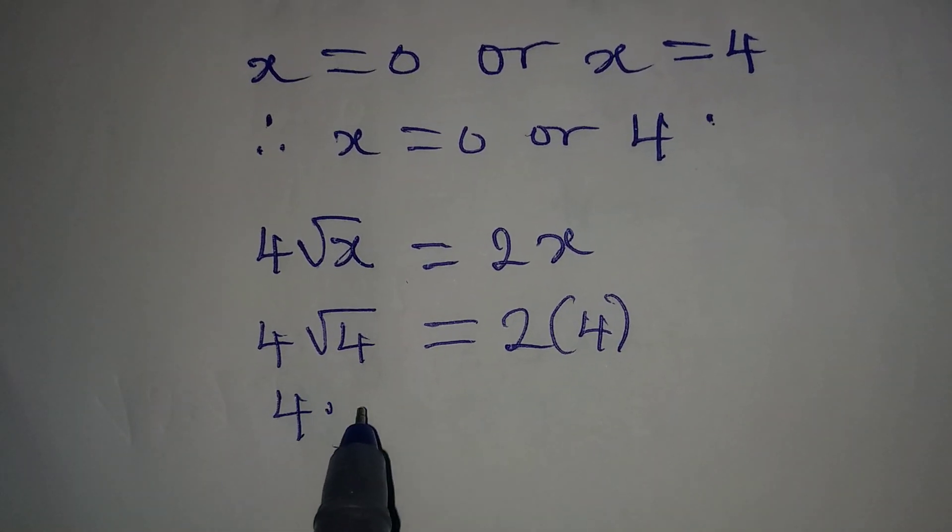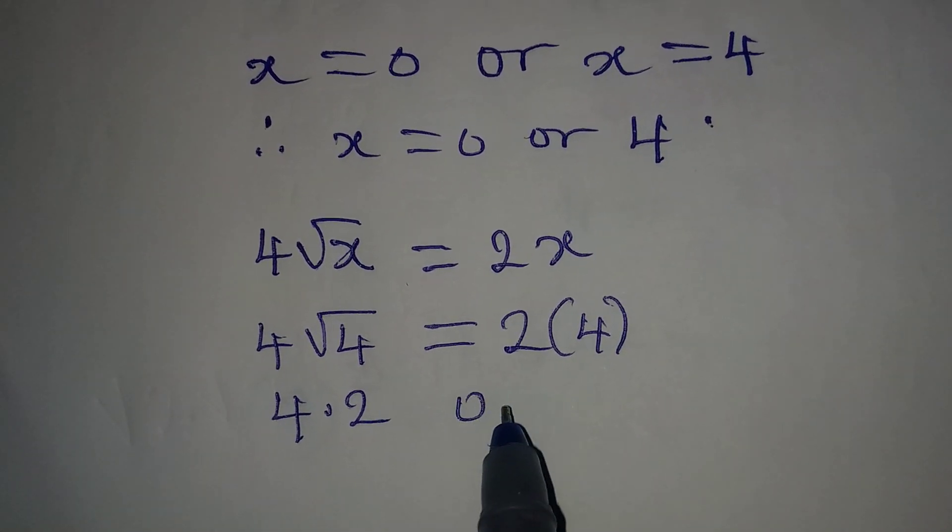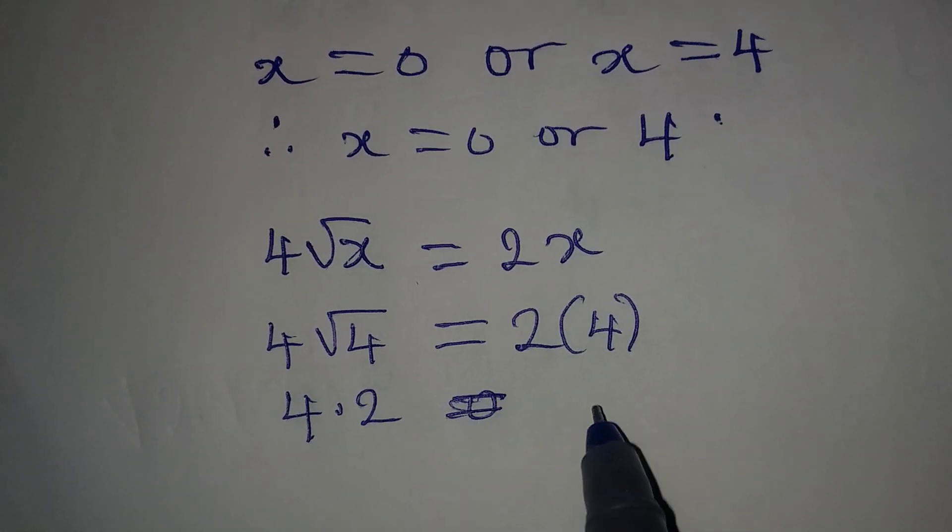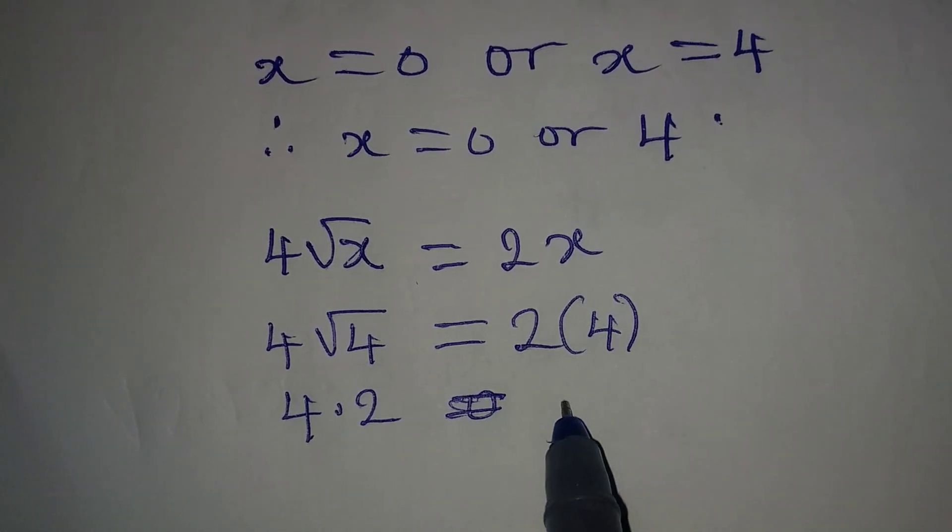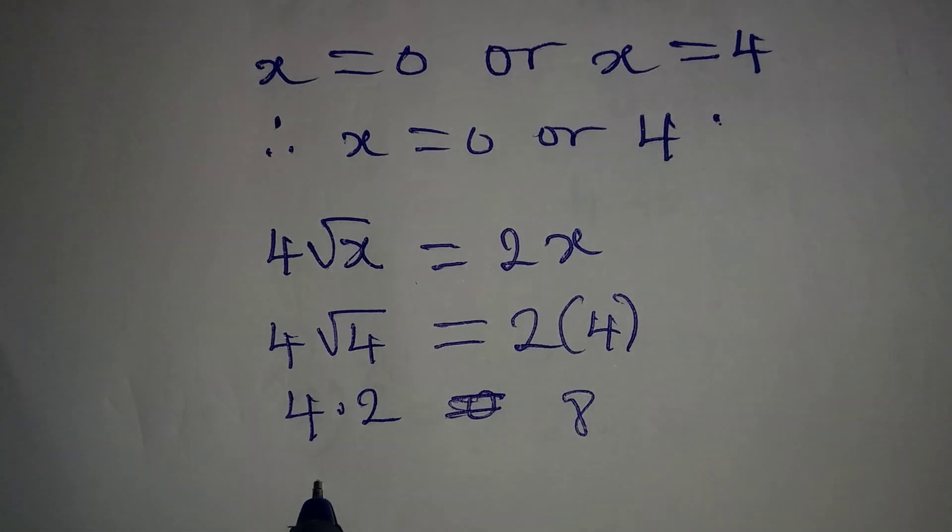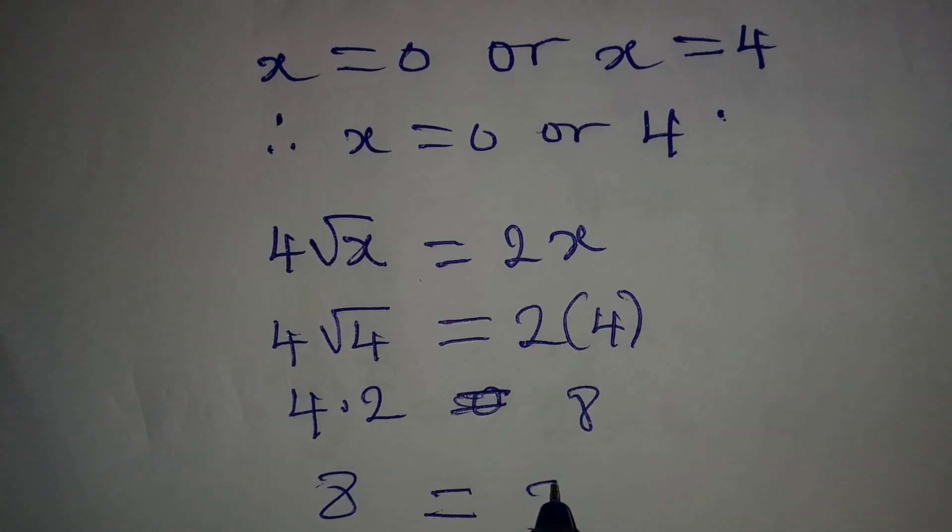This will be 4 times 2, which is equal to 4 times 2 or 2 times 4 will give 8. And this is equally 8, which is equal to 8.